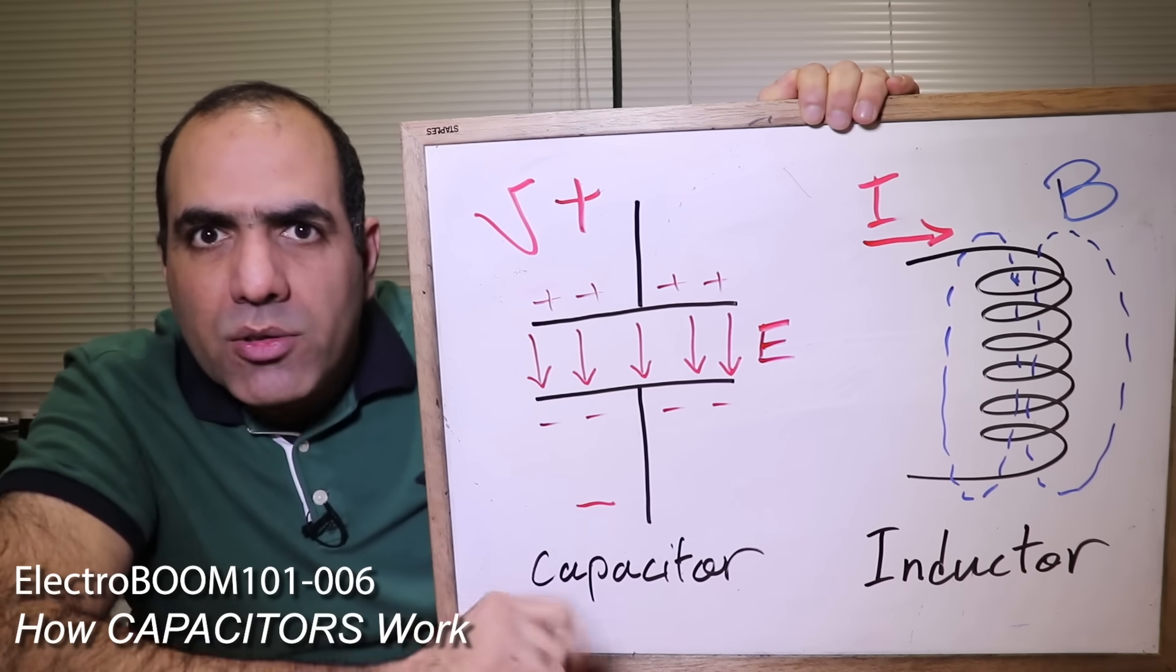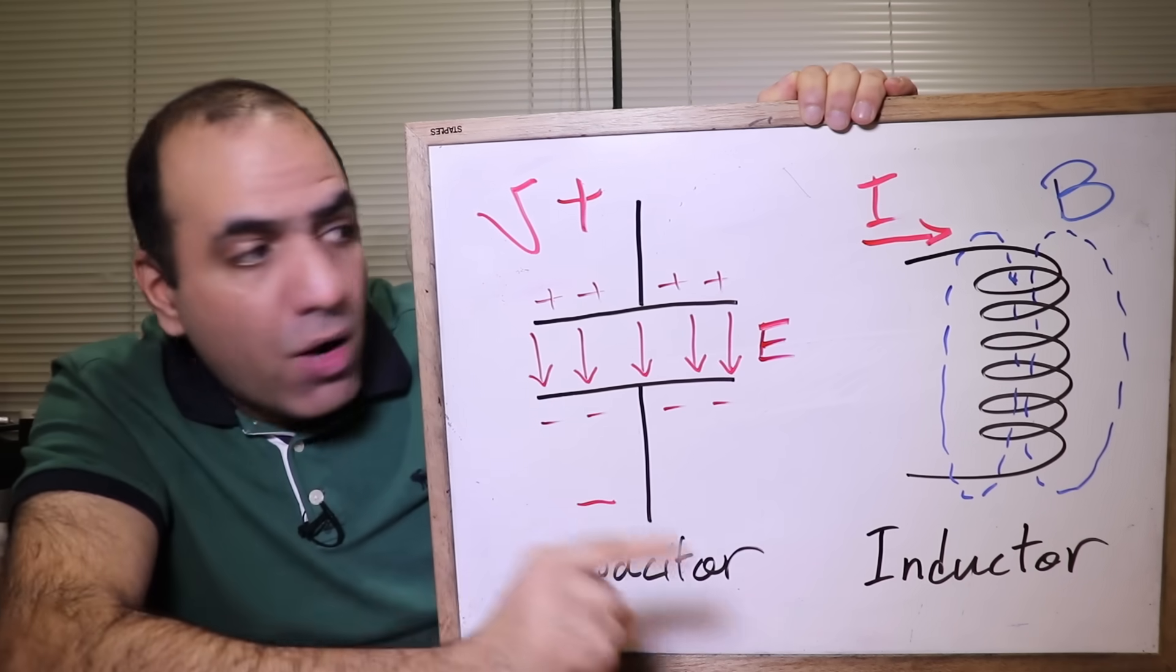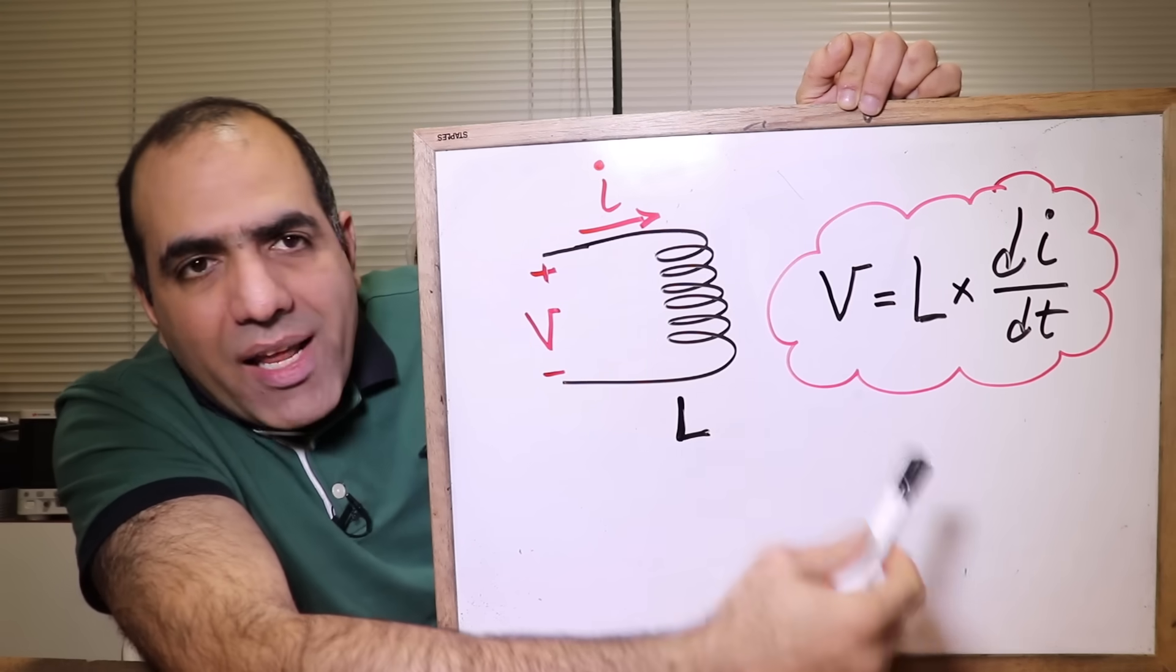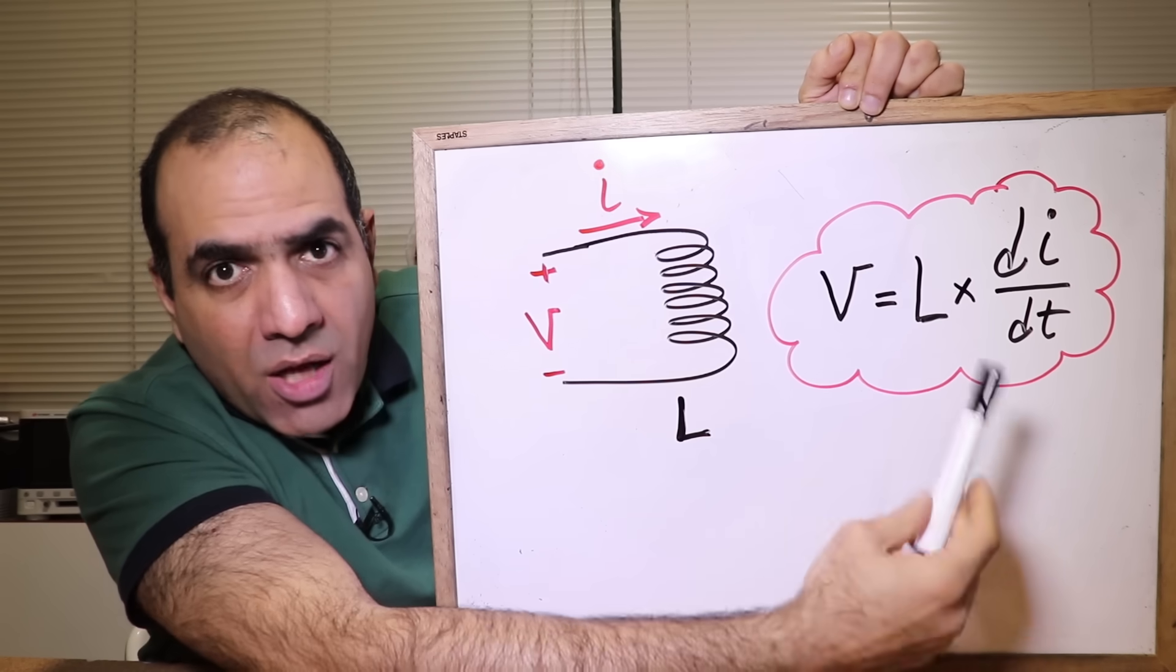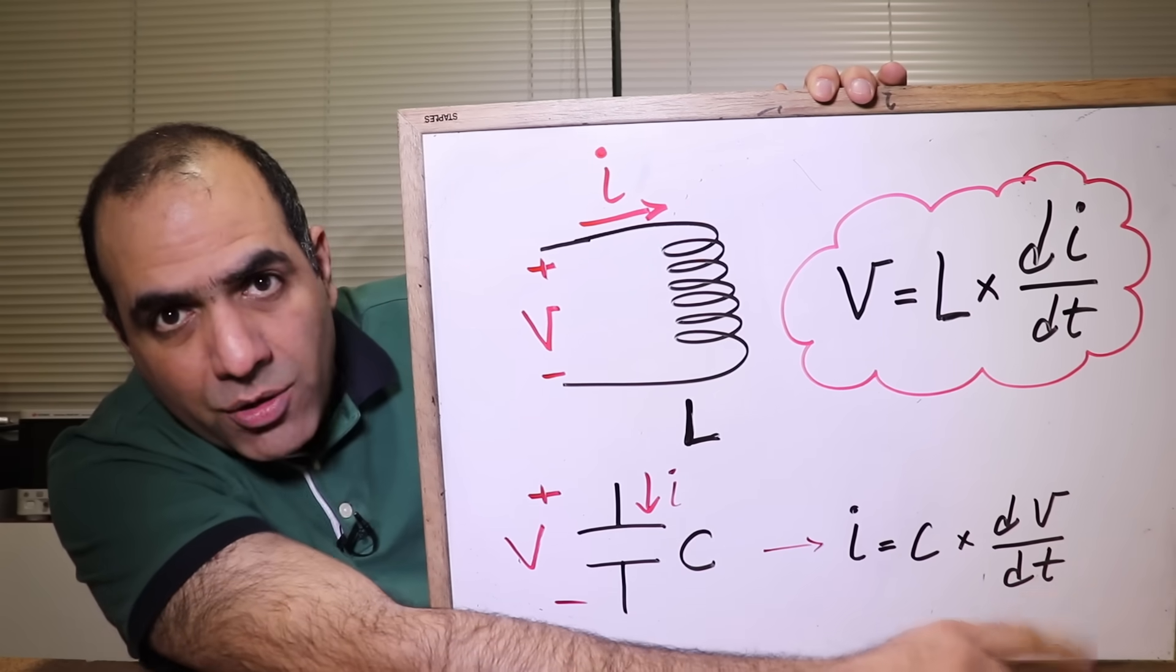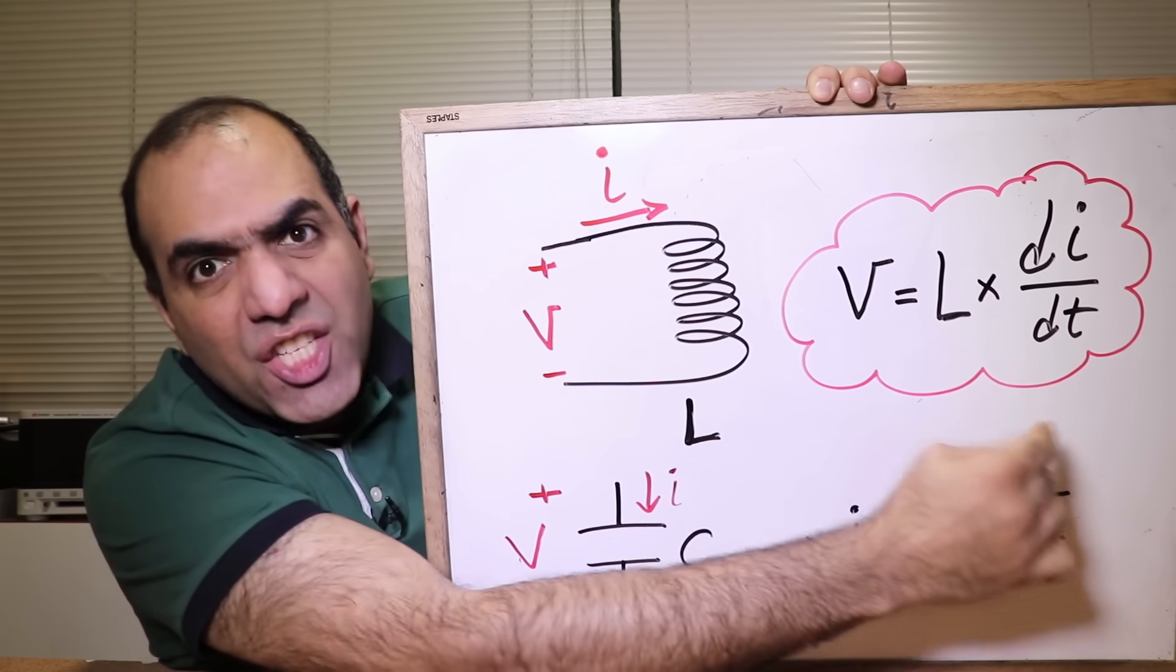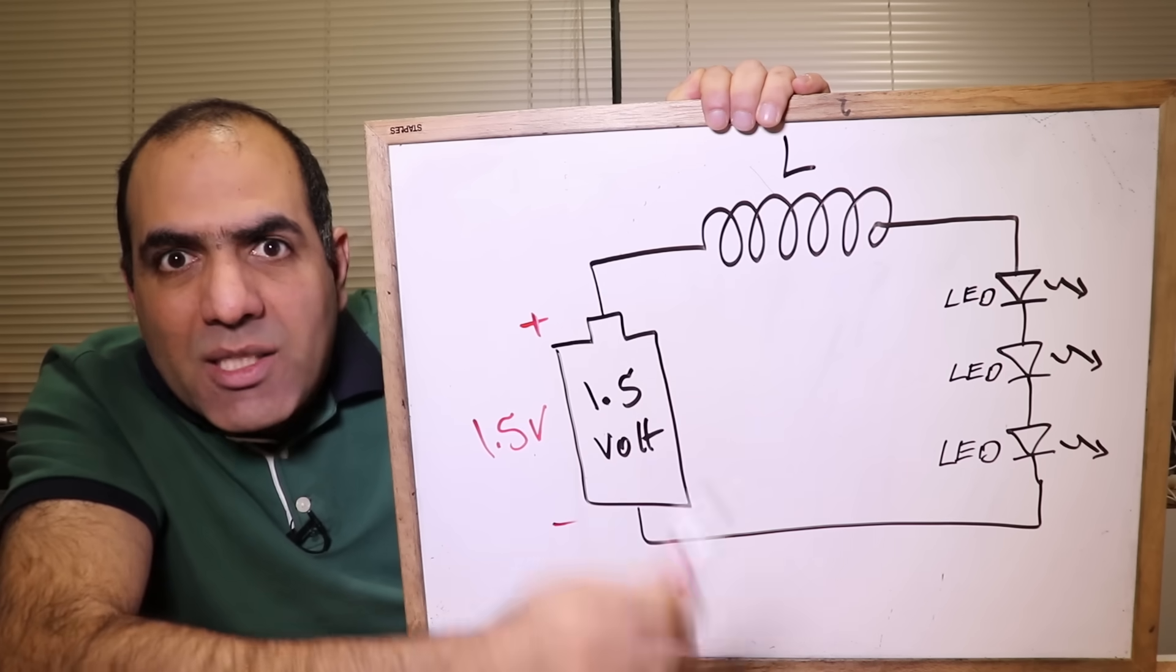So this is important. In my previous ElectroBoom 101 episode, I told you that capacitors store energy in form of electric fields and oppose the change of voltage. Now inductors store energy as magnetic fields and oppose the change of current. Don't forget that. And here's what we end up calculating through complex math for a relation between voltage and current of an inductor. Basically, the voltage across an inductor is equal to its inductance times the rate of current change in time. If you remember from the capacitor episode, the voltage across a capacitor cannot change instantaneously in no time because that would mean infinite current through the capacitor. Now the current through an inductor cannot change instantaneously because that would mean infinite voltage across it.